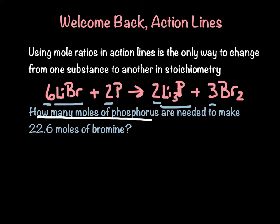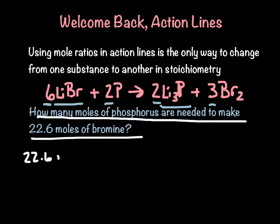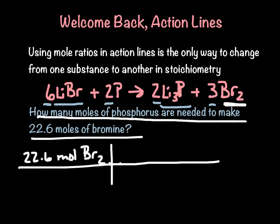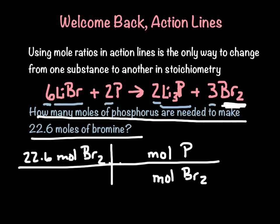If I get a question like: how many moles of phosphorus are needed to make 22.6 moles of bromine? I'm going to make a simple action line. I start with what I'm given: 22.6 moles of Br2. Then I use mole ratios to convert. On the action line, I copy down my units — moles of Br2 — and I can go to moles of anything else on this balanced chemical equation. I want to get to phosphorus. I copy the coefficients: two in front of phosphorus, three in front of bromine. So I put in two moles of phosphorus over three moles of bromine. Moles of bromine cancel out and I'm left with moles of phosphorus.